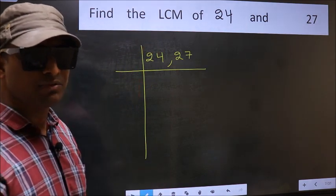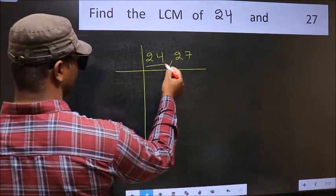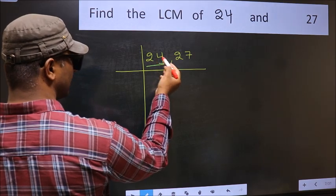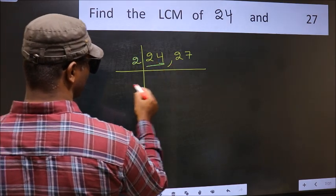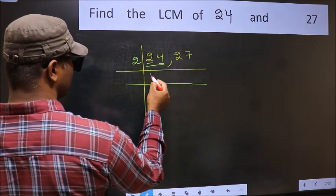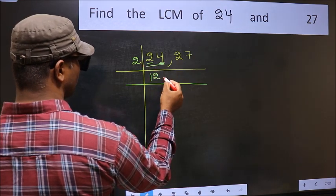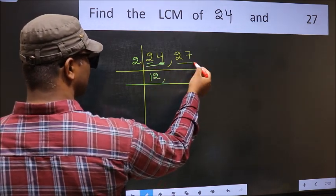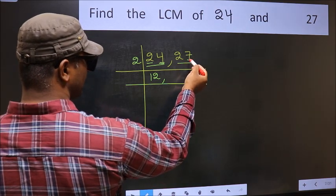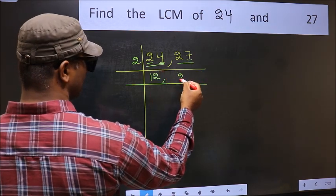Now focus on the first number, which is 24. The last digit is 4, which is even, so take 2. 24 divided by 2: 2 times 1 is 2, and 2 times 2 is 4, so 24 divided by 2 gives 12. The other number 27 — last digit 7 is not even, so it is not divisible by 2. Write it down as it is.